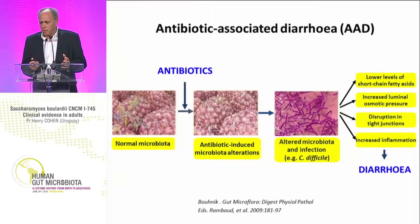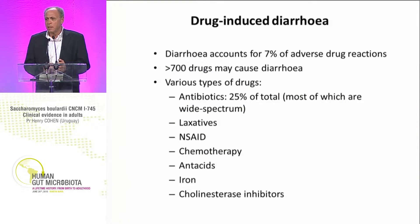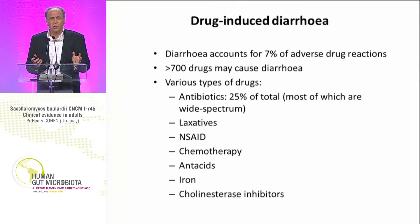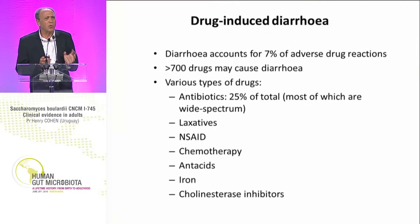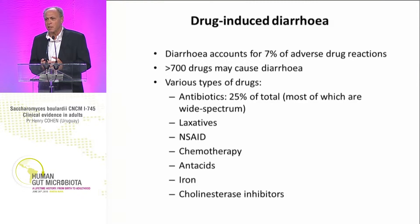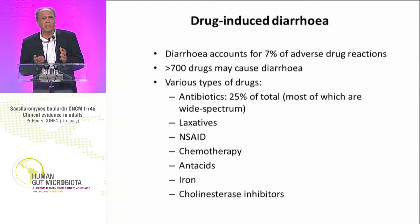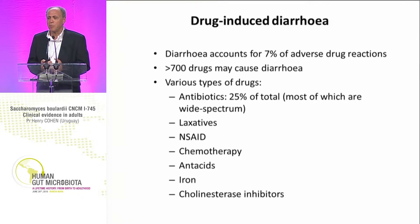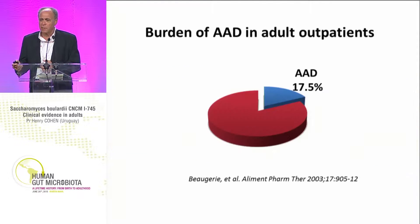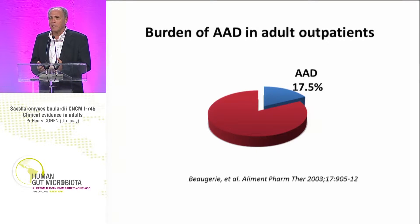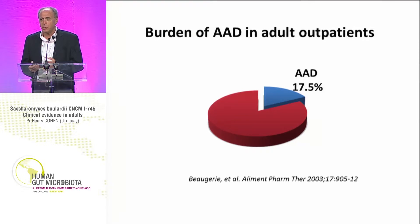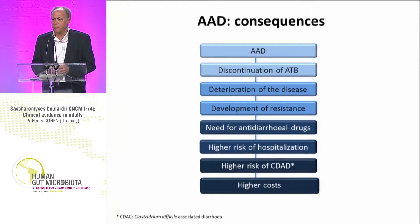What happens with antibiotic-associated diarrhea? They constitute 7% of adverse effects to drugs, so this is very frequent. There are different drugs — at least 700 — and the most frequent is antibiotic-related diarrhea. Most of these antibiotics are the wide-spectrum ones, like beta-lactams, but also chemotherapies, antacids, and other inhibitors. This slide was mentioned by our previous speaker, and Ivan made a question regarding children, but this is not the same thing. Antibiotic-associated diarrhea could be 3% up to 17.5% in adults.